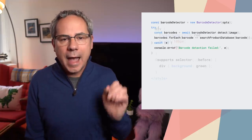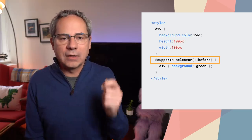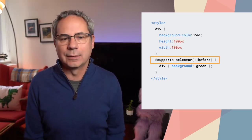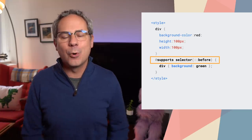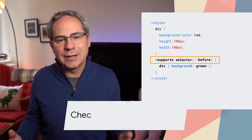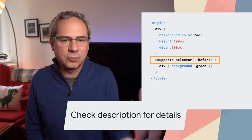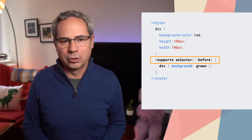Chrome now supports the barcode detection API, which provides the ability to detect and decode barcodes. And the new CSS @supports function provides feature detection for CSS selectors. Of course, there's plenty more in Chrome 83. All the details, including links, docs, and specs, are in the updates post linked in the description.